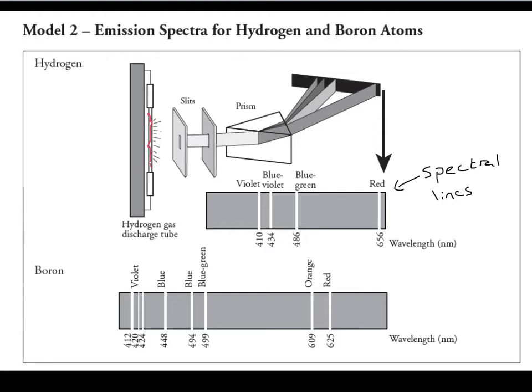This doesn't change from place to place, atom to atom, or even state of matter to state of matter. Solid, liquid, or gas — if you give it the energy, it's always going to produce its unique spectral lines. Hydrogen is always going to look like that, and boron is always going to look like that. You can type this into Google and look at the spectral lines for every single element known to mankind.